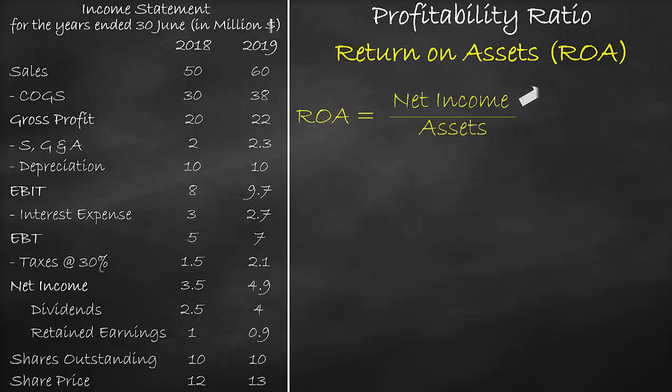We can get the net income from the income statement and assets from the balance sheet. Note that the income statement is a flow account, which means it is calculated over a year, while the balance sheet is a stock account, meaning it is calculated at a certain point in time. Since we cannot compare a year value to a day value, we need to convert the balance sheet items into a yearly value. This is calculated by getting the average of the two balance sheet items from different years.